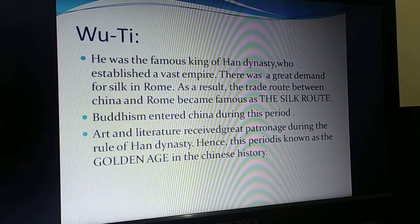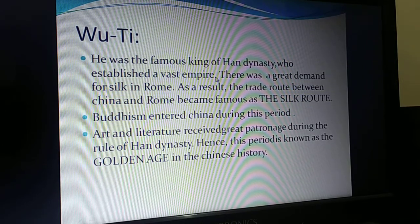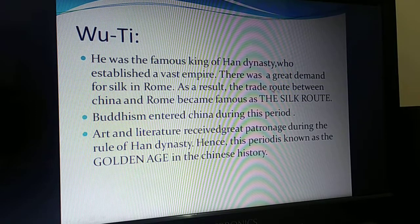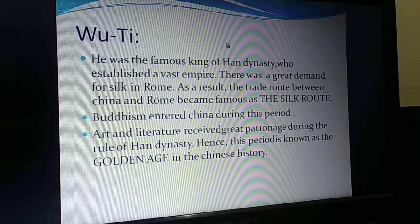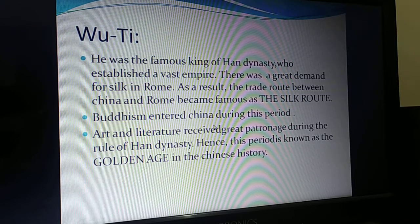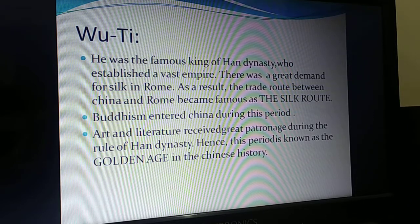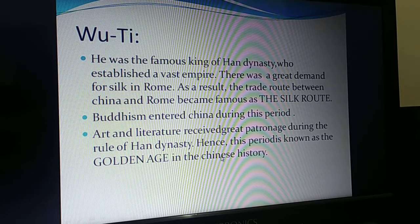Another famous king was Wuti, a famous king of the Han dynasty who established a vast empire. There was a great demand for silk in Rome. As a result, the trade route between China and Rome became famous as the Silk Route. Buddhism entered China during this period and art and architecture received great patronage. Hence, this period is known as the golden age in the history of China.